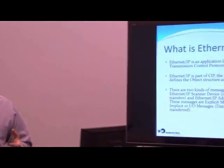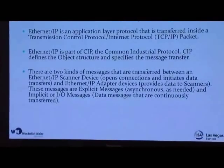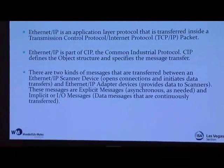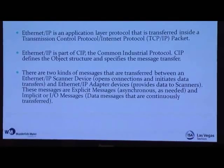When we talk about Ethernet IP devices, there are two kinds: scanners and adapters. Scanners are the devices you might consider the keeper or master — they initiate and control the communication. Adapters are slave devices or end nodes that provide data to the scanners. There are also two different types of messaging: explicit messaging, which is asynchronous, triggered either by a timer or an event; and implicit or IO messaging, which is a continuous connection where the scanner opens a permanent connection with the adapter and data transfer is continuous between the two devices.